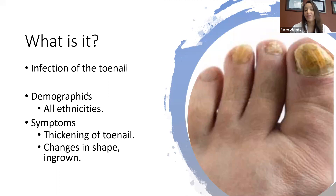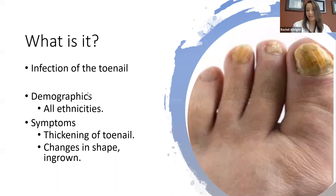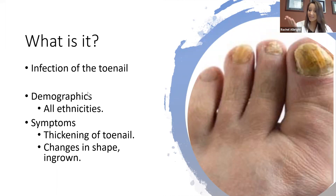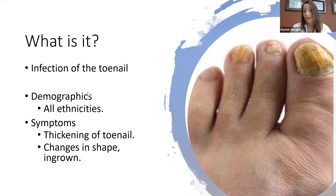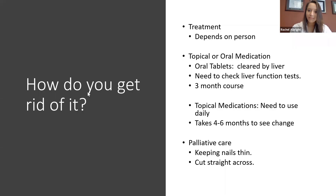Symptoms include thickening of the nail, change in shape, and change in color. Some people become more prone to ingrown toenails because the nail changes shape. You might notice debris underneath the nail. Sometimes people experience pain because when the nail gets really thick it hits the top of the shoe, and that constant pressure can cause a lot of discomfort. So nail fungus can actually lead to pain.